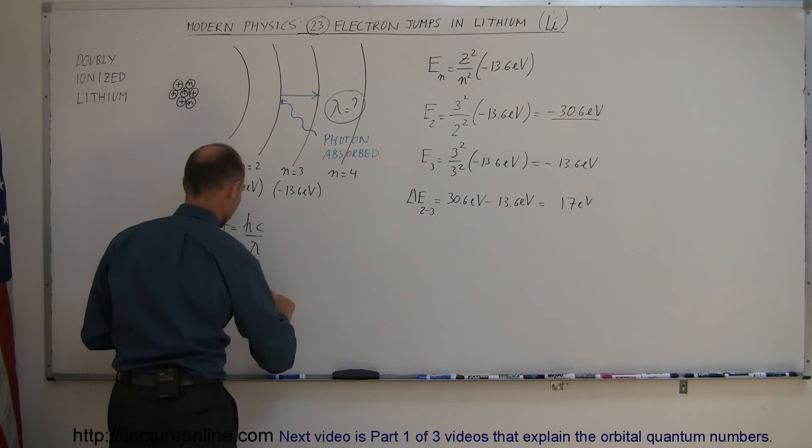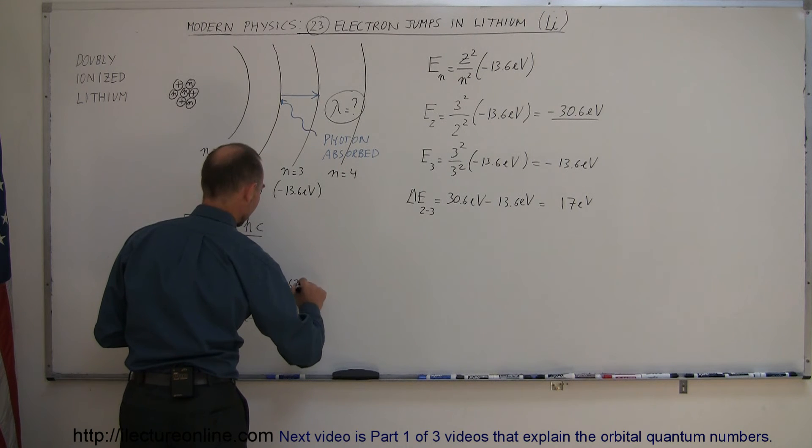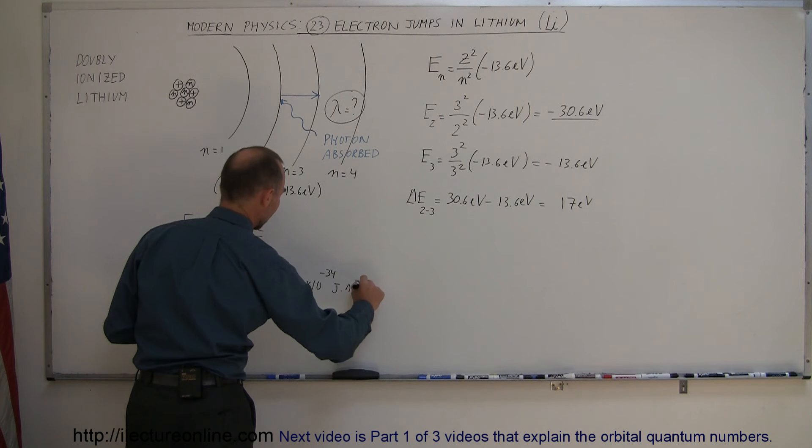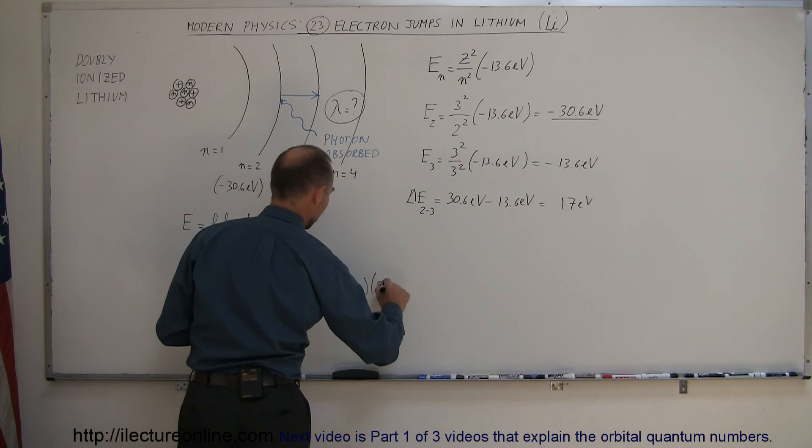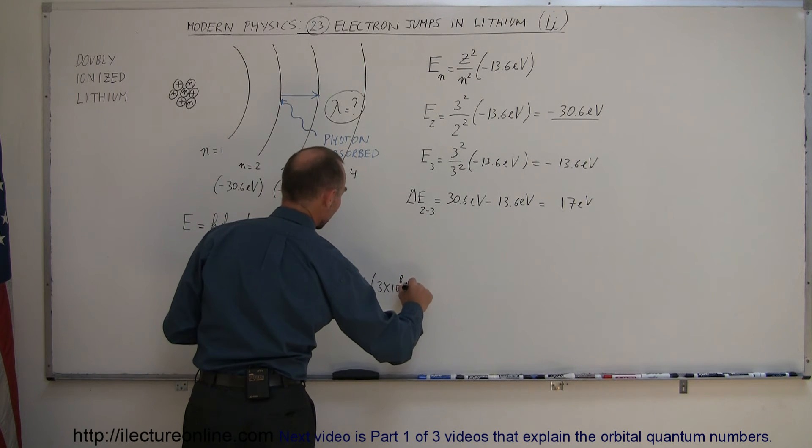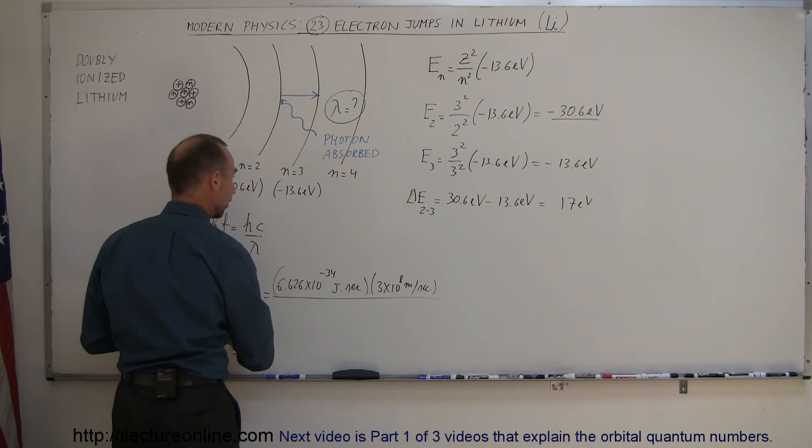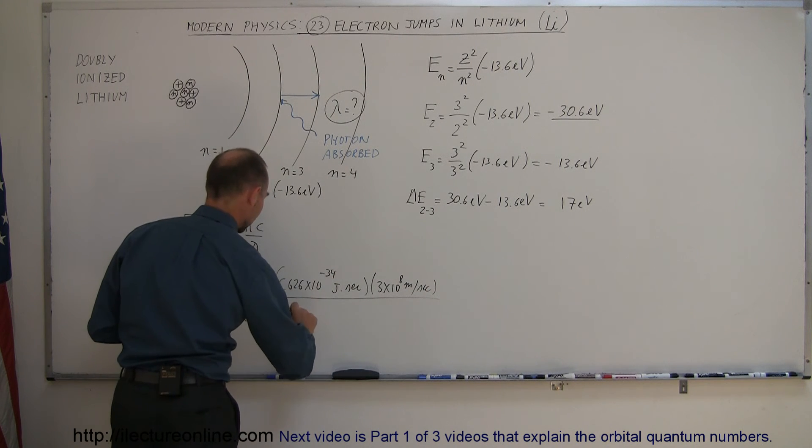Plug in the numbers. This is equal to 6.626 times 10 to the minus 34 joules times seconds. Multiply it times the speed of light, 3 times 10 to the 8 meters per second.